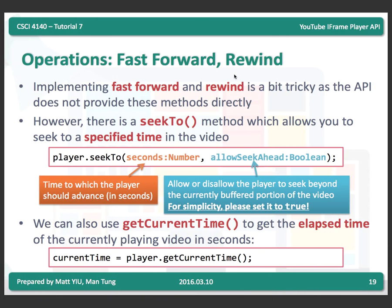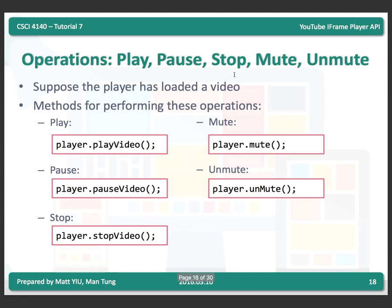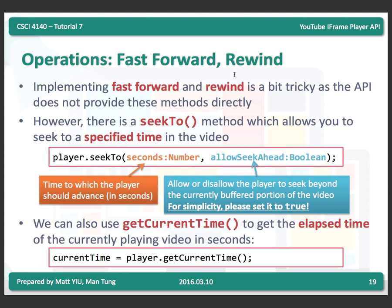We stopped at this page last week. We covered how to use the iframe API to do play, pause, stop, mute, and unmute. Now I'll talk about how to implement fast forward and rewind. This function is a little tricky because the YouTube iframe API does not provide a direct fast forward or rewind call. Instead, they provide a function called seekTo, which seeks to a specific time in the video. You call player.seekTo with the target time in seconds, and pass true as the second argument.